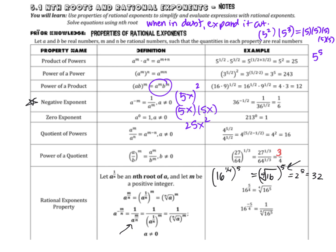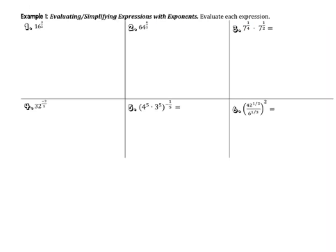Let's look at some examples and see how these properties help us simplify expressions that look complicated. For some problems, there are multiple approaches — it might help to rewrite using radicals, or if you're strong in number sense, to rewrite using exponents. I'll show you two different ways, and you can figure out what works best for you.